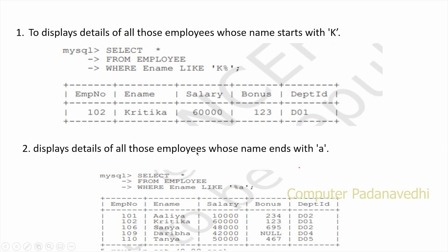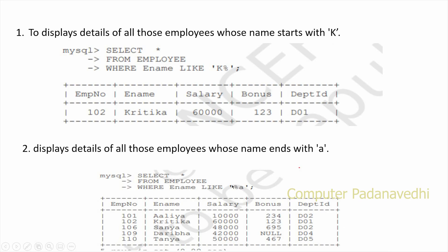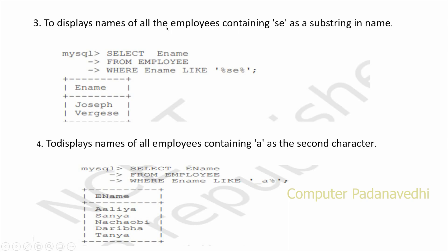Display details of all those employees whose name ends with A. SELECT * FROM Employee WHERE Ename LIKE '%A'. Percentage A means the name ends with A.